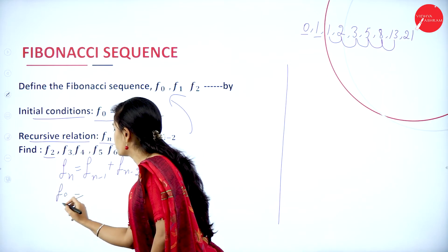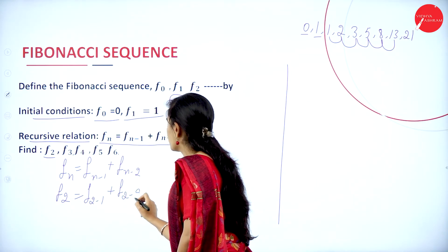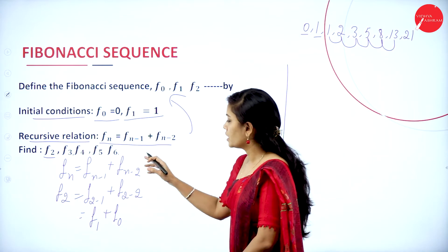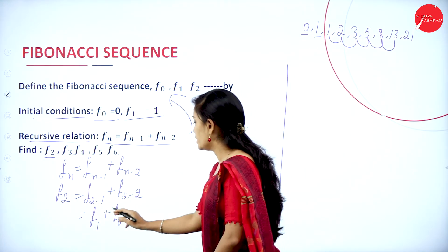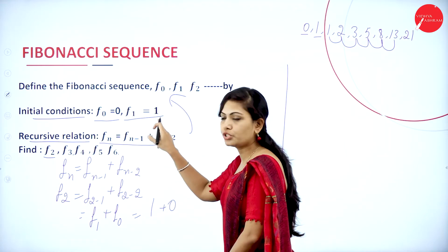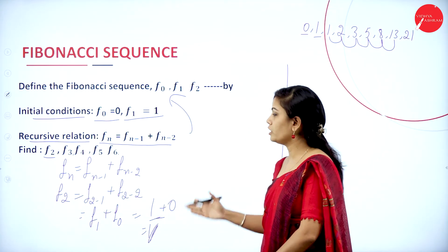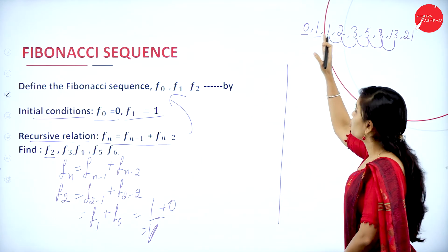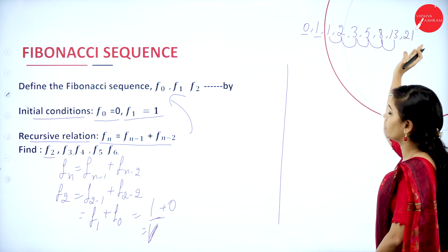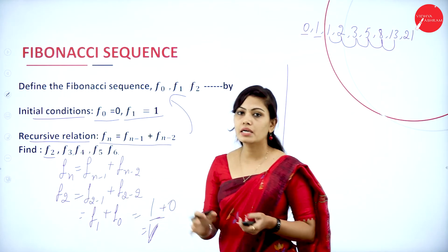To find F2, substitute n = 2 into Fn = Fn-1 + Fn-2: F2 = F1 + F0. F1 = 1 and F0 = 0, so F2 = 1. So: 0 + 1 = 1, 1 + 1 = 2, 2 + 1 = 3, 3 + 2 = 5, 5 + 3 = 8, 8 + 5 = 13, 13 + 8 = 21. This is the Fibonacci sequence, and it can be used to simplify recursive relations.